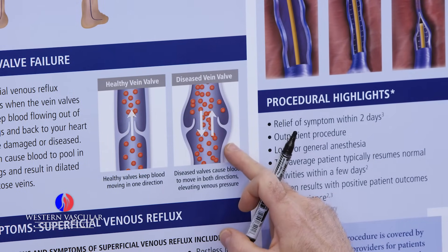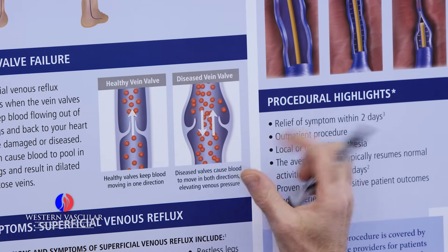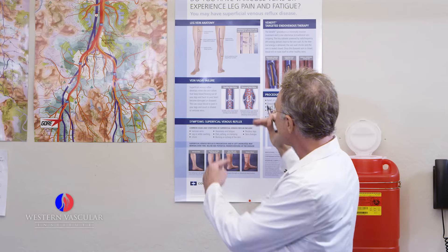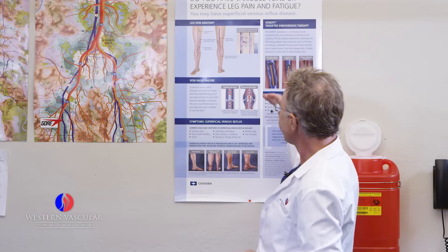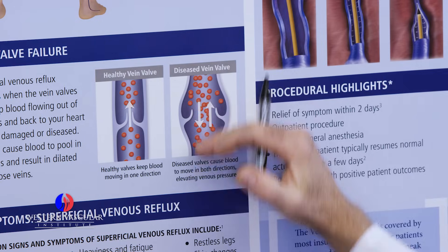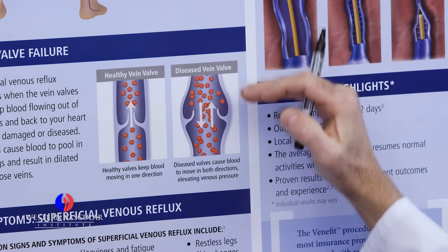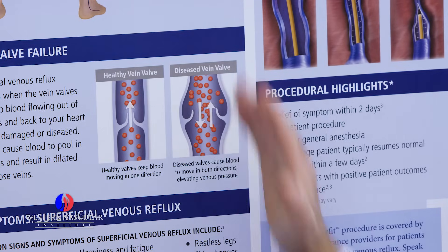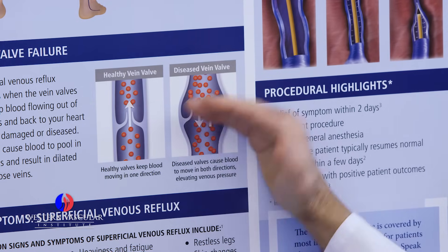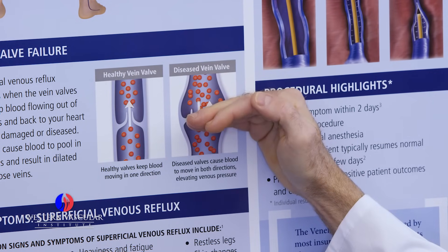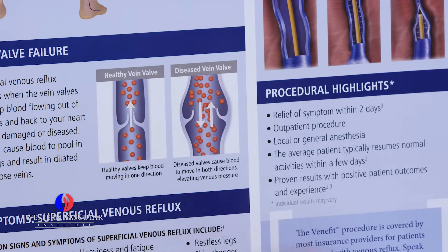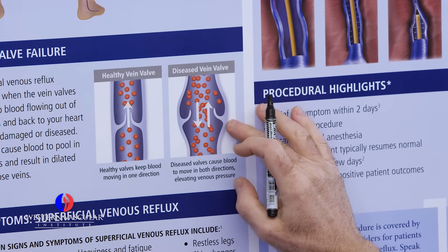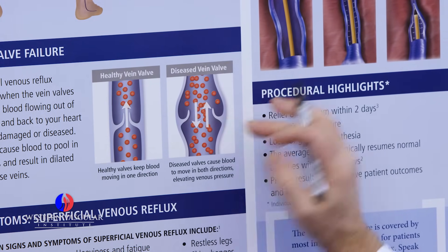This is a diseased vein — it's dilated or varicose. These valves are bent and don't touch each other, so when the patient is sitting or standing and blood tries to move back up toward the heart, the valves remain in an open state and cannot close to prevent blood from falling back down toward the leg. This illustrates a diseased varicose vein and a dysfunctional valve.